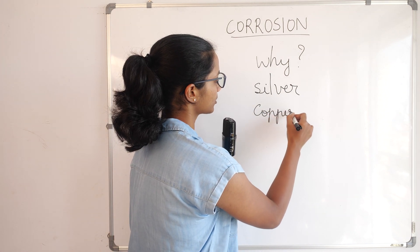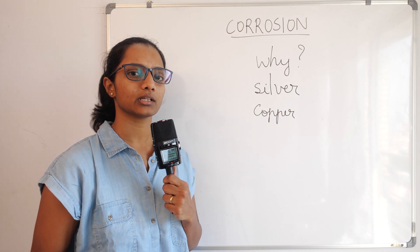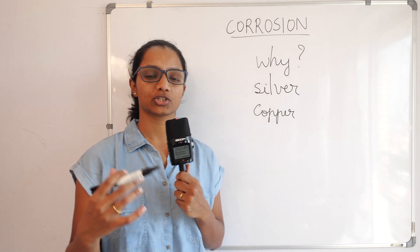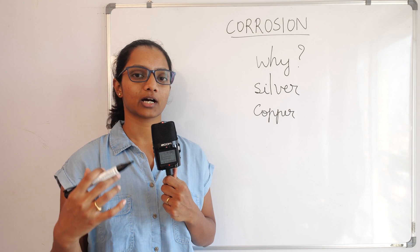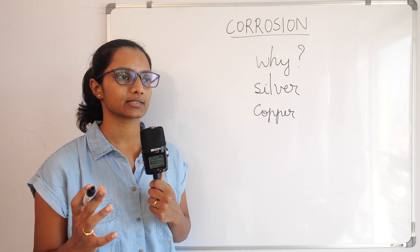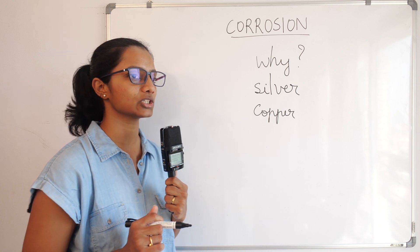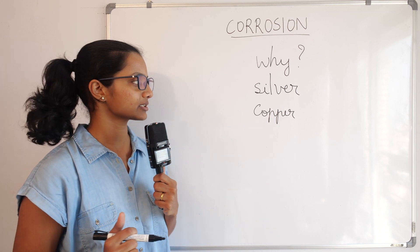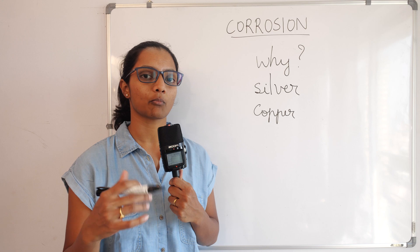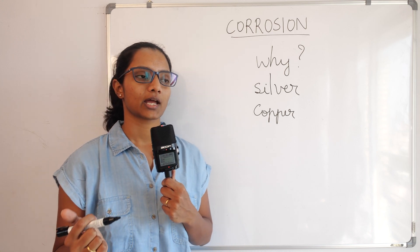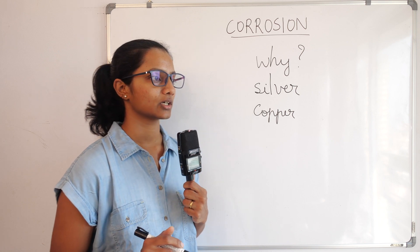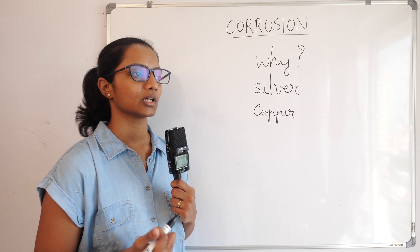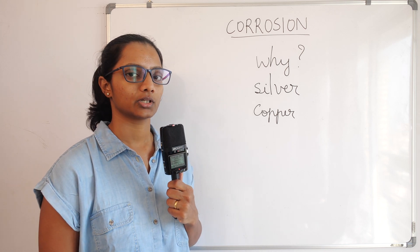With copper — copper vessels or any articles — when copper is new it is very shiny, but after some days or months it gets a greenish or blackish tinge and looks very dull and not lustrous. The reason is that it reacts with moist carbon dioxide in the environment and forms copper carbonate. So metals react with elements or compounds in the environment and get corroded.